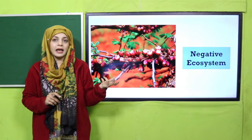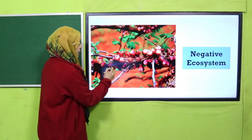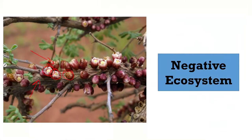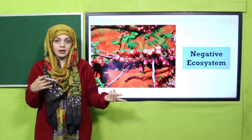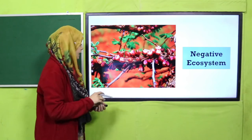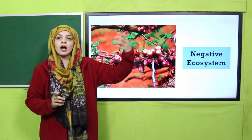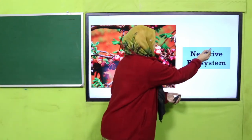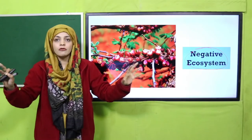Now let's explain a negative ecosystem. There is a plant called a stem sucker — those small flowers you see are not actually part of the tree; they are a separate plant called a stem sucker. It has no roots or stem of its own, so it grows on top of another tree or plant, takes food and nutrition from it, and gives nothing back — it actually weakens the tree. It takes all the nutrients from the tree and then throws its seeds onto another healthy tree to grow there. This is a negative ecosystem because only the stem sucker benefits, while the tree gets nothing.